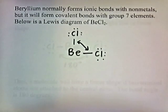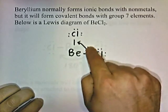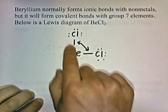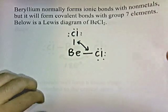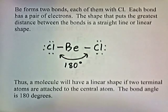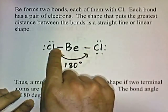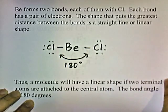Beryllium normally forms ionic bonds with nonmetals, but it will form covalent bonds with group 7 elements. Below is a Lewis diagram of beryllium chloride. These arrows indicate that the pairs of electrons between the atoms want to move away from each other. Beryllium forms two bonds, each with chlorine. Each bond has a pair of electrons. The shape that puts the greatest distance between the bonds is a straight line, or linear shape. A molecule will have a linear shape if two terminal atoms are attached to the central atom. The bond angle is 180 degrees.